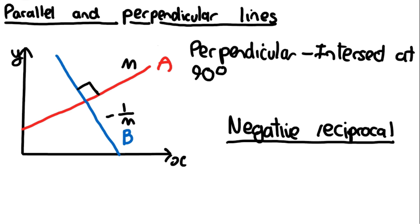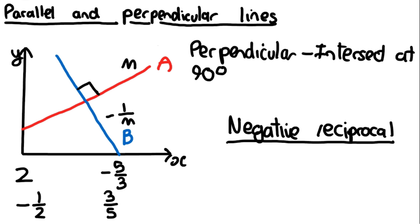Let's put this into number form. If the gradient of A equals 2, then the gradient of B is going to be minus 1/2, because you flip the number and put 1 on top. If the gradient of A equals minus 5/3, then since it's a negative reciprocal, the negative cancels, and it becomes positive 3/5. And if the gradient of A is 1/4, then the gradient of B is going to be minus 4.